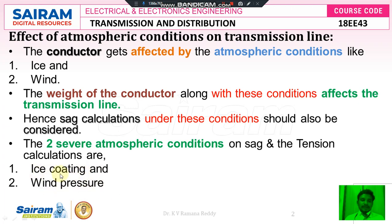Due to ice coating, the weight and tension on the conductor increase. Due to wind pressure — because wind is always perpendicular to the surface area of the conductor — the sag on the conductor changes. Therefore, there is an effect of atmospheric conditions on the transmission line, and these effects must also be taken into account. Only then can we define the overall formulae according to the effect of these conditions.